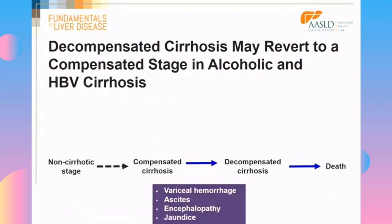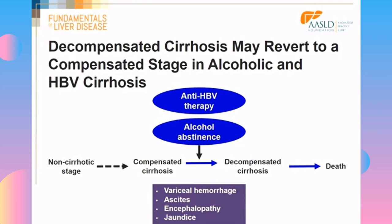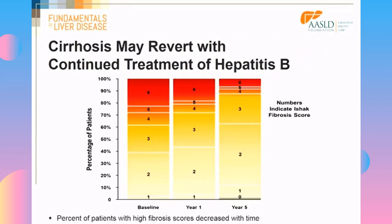With treatment — for example, alcohol abstinence in alcoholic cirrhosis and anti-HBV therapy in hepatitis B — the patient can revert from a decompensated stage to a compensated stage, and all complications may disappear. More importantly, it turns out that a patient with cirrhosis can revert to not having cirrhosis. Evidence from hepatitis B trials shows that 74% of patients who had cirrhosis at baseline no longer had cirrhosis at year 5. We are now in an era of therapy that can actually reverse cirrhosis.